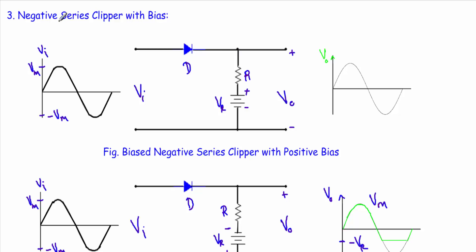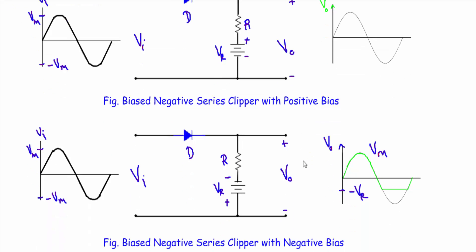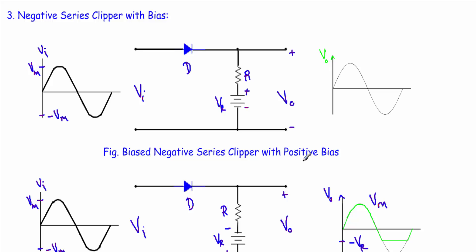In this video I will show you the negative series clipper with bias circuit: one with positive bias — biased negative series clipper with positive bias — and another with negative bias — biased negative series clipper with negative bias. Let me talk about the biased negative series clipper with positive bias. If we have a diode and a resistor connected like this, that is our negative series clipper circuit. If I add a bias voltage here, that will be our biased negative series clipper. Since we are applying positive bias voltage, it will be the biased negative series clipper with positive bias.